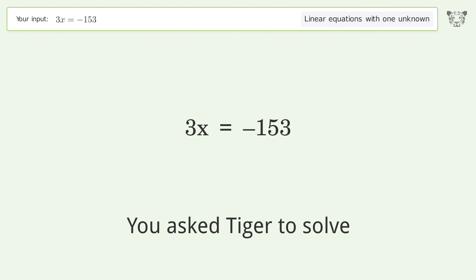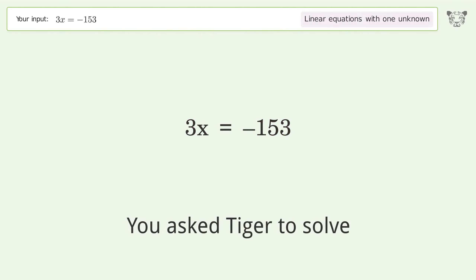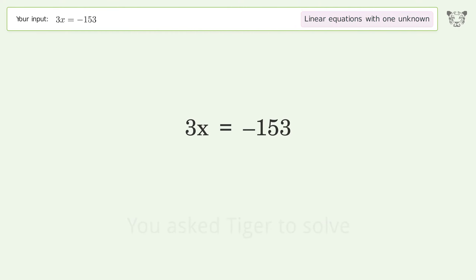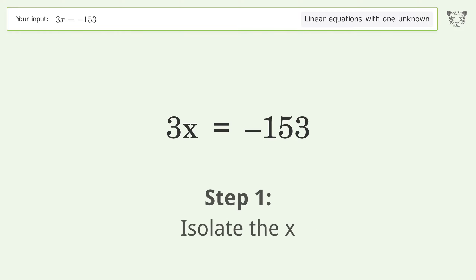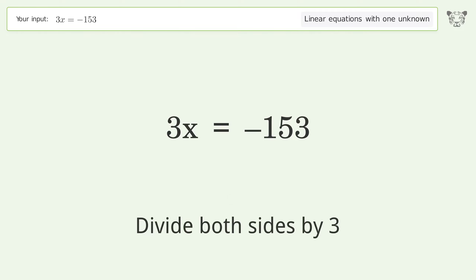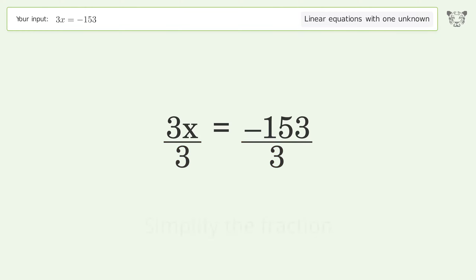You asked Tiger to solve this — it deals with linear equations with one unknown. The final result is x equals negative 51. Let's solve it step by step: isolate the x, divide both sides by three, and simplify the fraction.